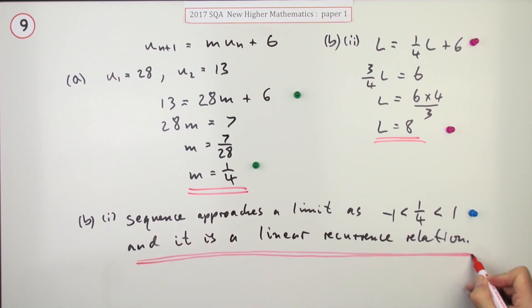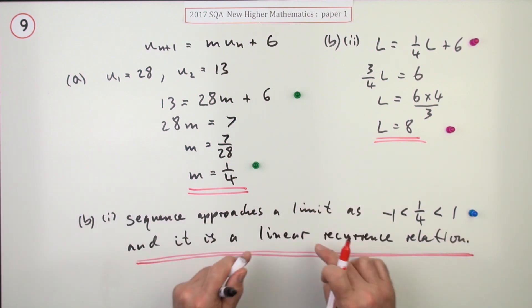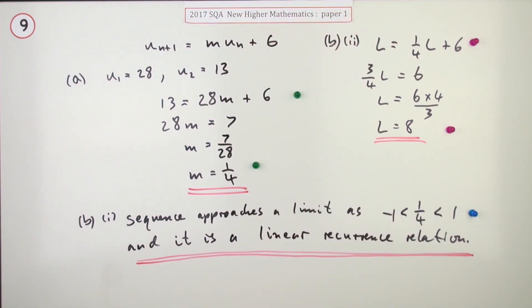Remember to put this in just in case anyway, this extra statement. Not just it approaches a limit because it's a proper fraction, but also because it's a linear recurrence relation. It looks like the equation of a line. There's no squares or anything else in it.